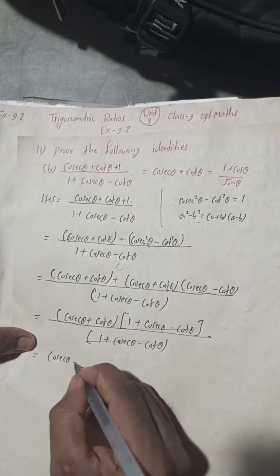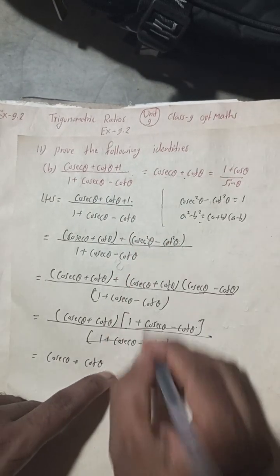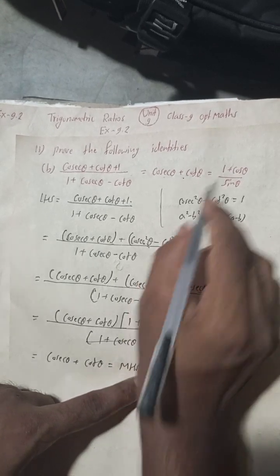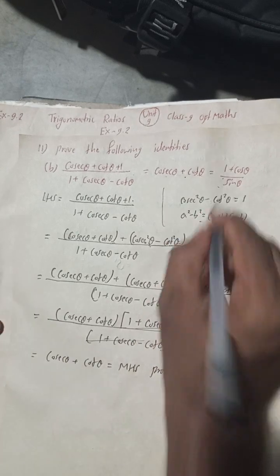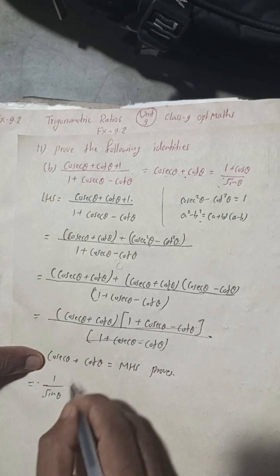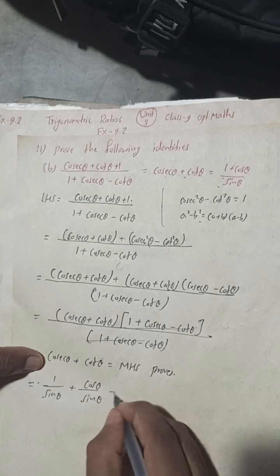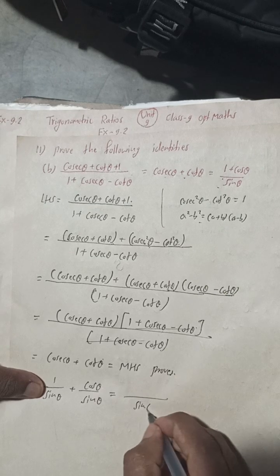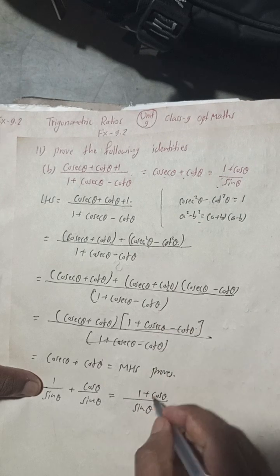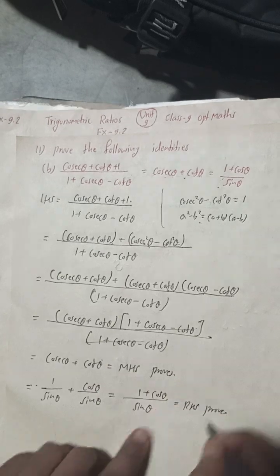We get cosec θ + cot θ, which equals the MHS (middle hand side) — proved. Now we prove the RHS. In one step: cosec θ = 1/sin θ, and cot θ = cos θ/sin θ. Taking sin θ as the common denominator, this gives (1 + cos θ)/sin θ, which is our RHS — proved.